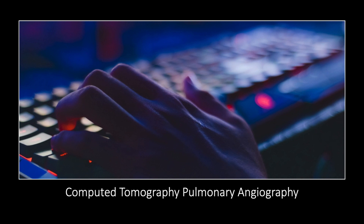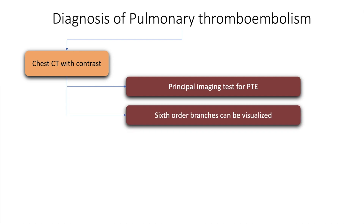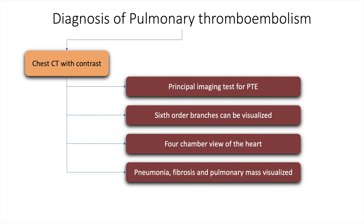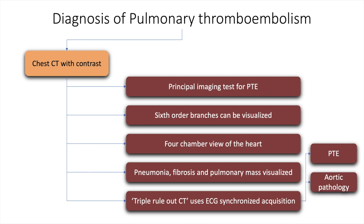Computed tomography pulmonary angiography is the principal imaging test for pulmonary thromboembolism, in which sixth-order branches and a four-chamber view of the heart can be visualized. Pneumonia, fibrosis, and pulmonary mass can be discerned as well. A triple rule-out CT uses ECG-synchronized acquisition wherein the three most common causes of chest pain — pulmonary thromboembolism, aortic pathology, and acute coronary syndrome — can be ruled out.